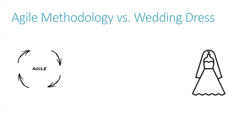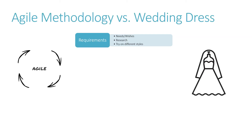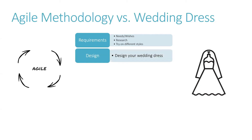Coming back to Agile and the wedding dress — what they have in common. For Agile you need to gather requirements, doing it in cycles to find out as much information as you need. The same is true for your wedding dress. You've got needs and wishes, you do research on websites, Pinterest, visit different shops, and try on different styles before deciding which one fits you. Then there's a design stage, working in cycles and iterations with frequent feedback loops so you can create the design you really want.